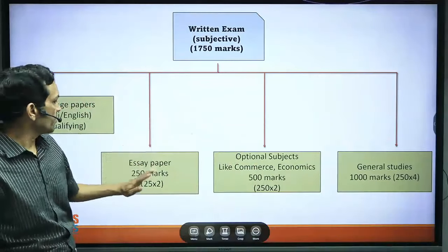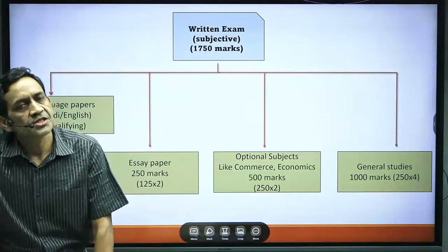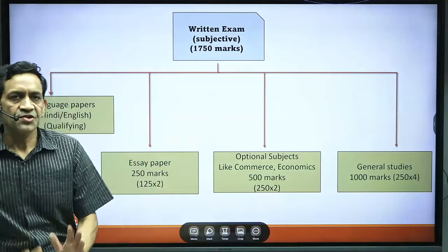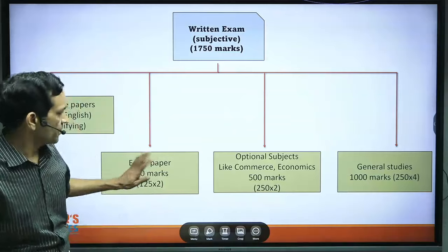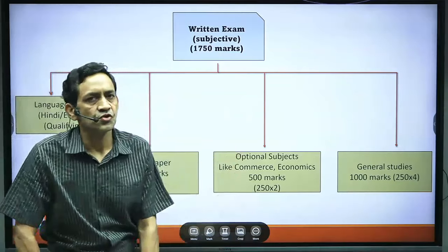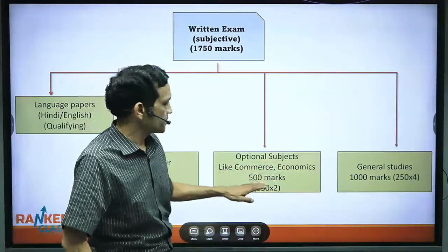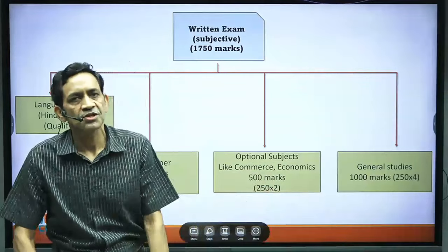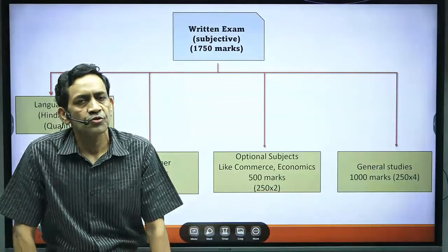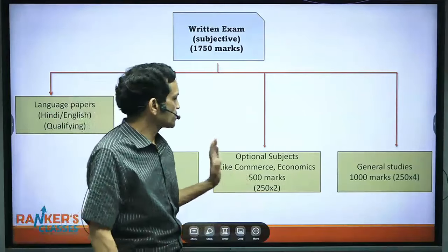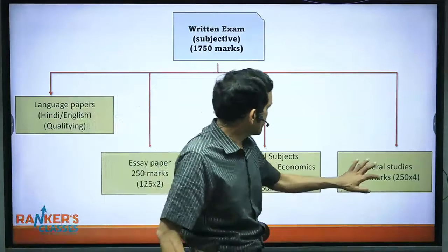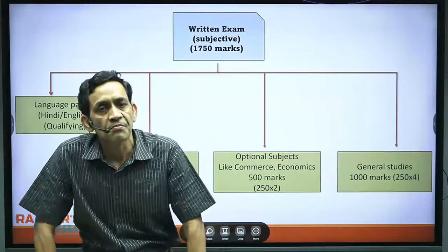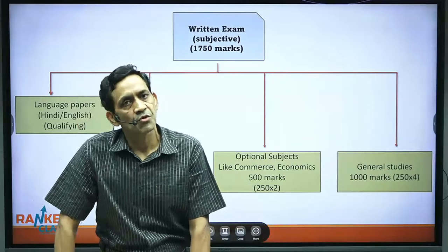The main marks are divided into three parts. First is the Essay paper — 250 marks — with two essays of 125 marks each, completed in a single day. After that comes the Optional Subject (e.g., History, Geography, Commerce, Economics) — total 500 marks, with two papers of 250 marks each (morning and afternoon, 3 hours each). Then General Studies — 1000 marks across 4 papers of 250 marks each, spanning two days (morning and evening).